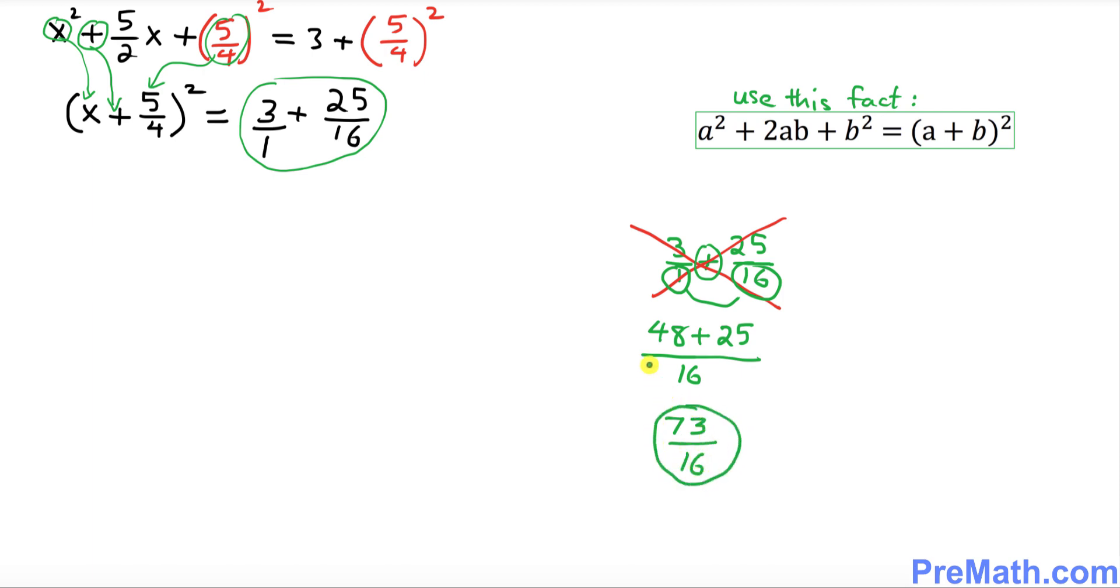That means when you add these two fractions we got 73/16. On the left hand side is (x + 5/4)².